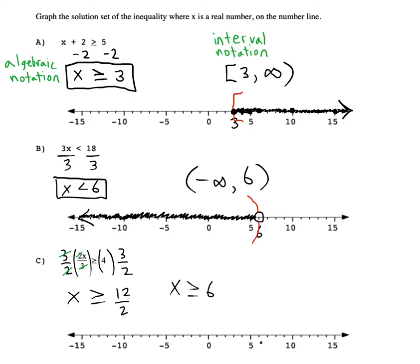Let's find 6 on the number line. The solution set includes 6, so we put a closed dot there and shade every number to the right of 6, putting an arrow to show it continues. That's our solution set — everything from 6 to infinity in interval notation.